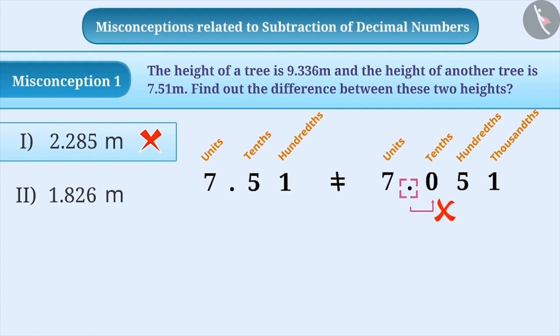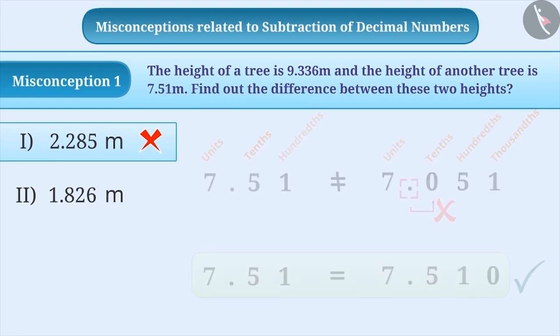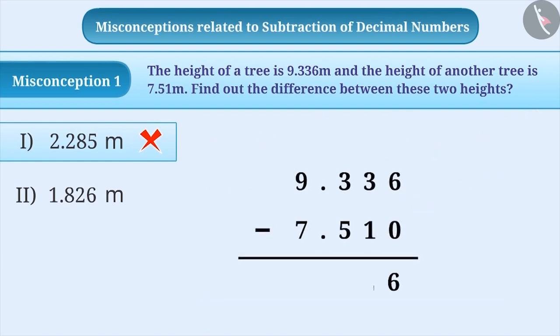That's why placing 0 right next to the decimal point in this number is incorrect. The correct understanding is that we have to place 0 after the decimal number, that is, after number 1. So there will be no change in the value of the number. With this understanding, the correct result of subtraction is found as 1.826 meter, which is option 2.